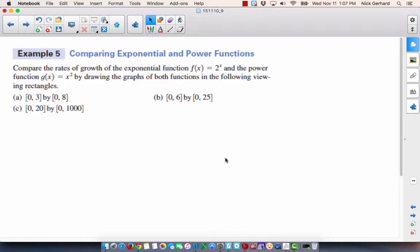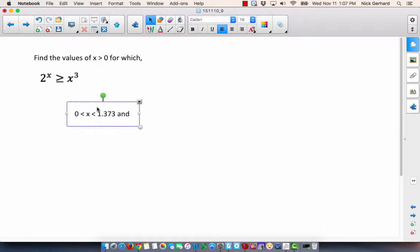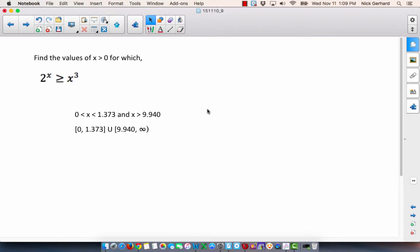And, so, my final answer back here to this problem would be for what values of x? Well, it's when x is greater than 0 but less than 1.373 and when x is greater than 9.940. If you want to write it in interval notation because it's greater than or equal to, we can include those points. And, so, you can go 0, 1.373 and then we'd write the union, and then we'll go 9.940 to infinity. And, there's our intervals where 2 to the x is greater than or equal to x to the third.